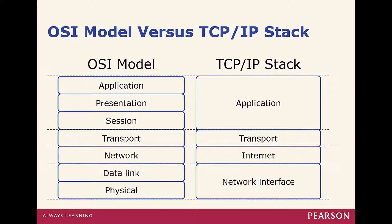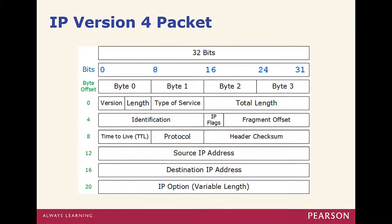Just like any envelope has a format, our IP packets have a format too. This is what an IPv4 packet looks like. We have fields for version, length, type of service, total length, identification, IP flags, offsets, TTL, protocol, checksum, IP source, IP destination, and IP options — followed by the actual data payload.